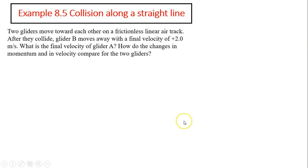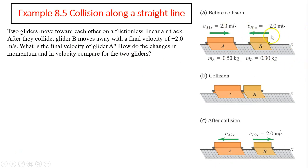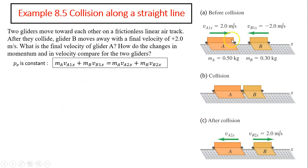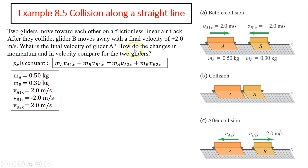Now let's consider another example. Two gliders are moving toward each other on a frictionless linear air track — one dimension in the x direction. After they collide, B moves away with a final velocity of 2 meters per second. What is the final velocity of A, and how do the change in momentum and velocity compare for the two gliders? Momentum is conserved, so momentum before equals momentum after. Substituting everything in, glider A has a final velocity of 0.4 meters per second going back to the left.